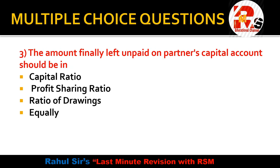Question 3 is from the chapter of piecemeal distribution of cash. The question asks: the amount finally left unpaid on a partner's capital account should be in capital ratio, profit sharing ratio, ratio of drawings, or equally? When we prepare the excess capital statement and then the statement showing piecemeal distribution of cash, the last answer — whether it is a loss or profit on realization — should be in the profit sharing ratio (PSR).